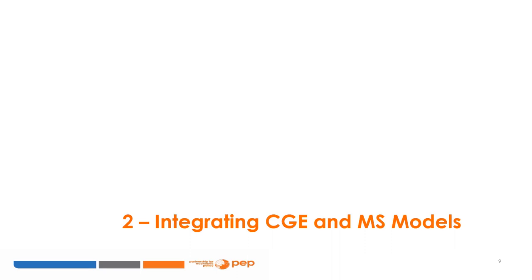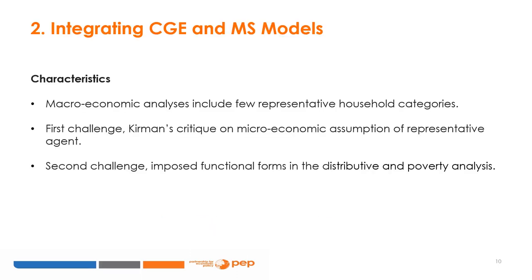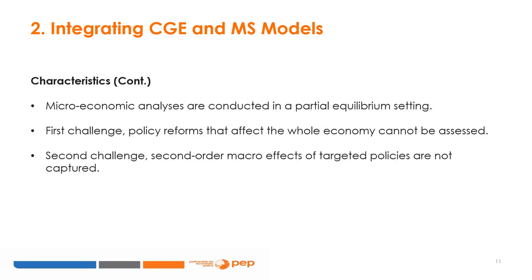Now let's talk about integrating CGE and MS models. Macroeconomic policies are analysed within an economy-wide framework with few representative household categories. There are two main critiques of the representative household categories in the CGE framework. Kirman's critique concerns reducing the behaviour of a group of heterogeneous agents to a single representative household. To perform a distributive and poverty analysis, income distribution functions are imposed within each household category with a variance estimated from the base year data. In the microsimulation models, distributive and poverty analysis are assessed in a partial equilibrium setting with household or individual level data. The two main critiques of MS models are that policy reforms affecting the whole economy cannot be addressed and that second-order macro effects of targeted policies are not captured.